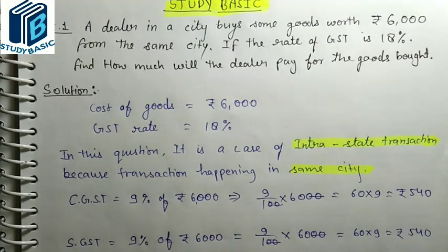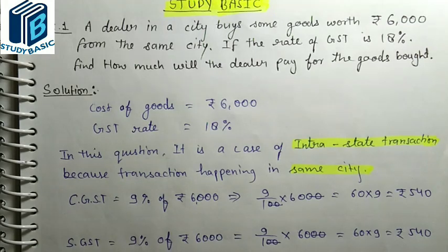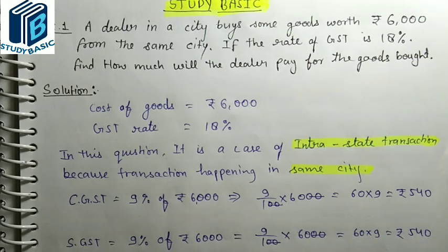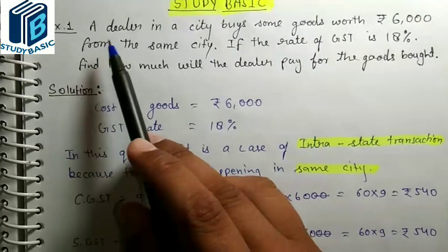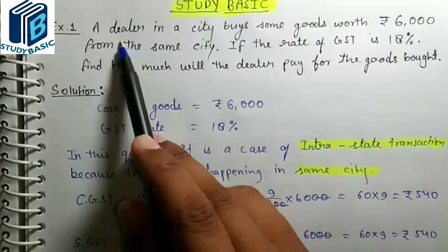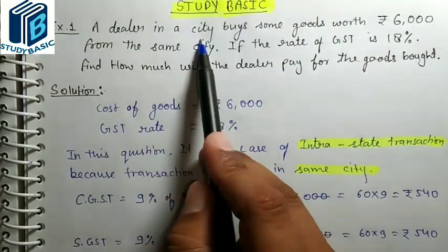Hello friends, welcome to our channel Study Basic. In this video we will solve examples of ICSE Class X Chapter 1, which is GST. So let's start the video. The first example is: a dealer in a city buys some goods.